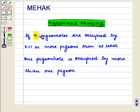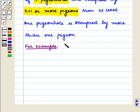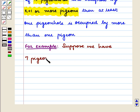If K pigeon holes are occupied by K plus 1 or more pigeons, then at least one pigeon hole is occupied by more than one pigeon. For example, suppose we have 7 pigeons and 6 pigeon holes.